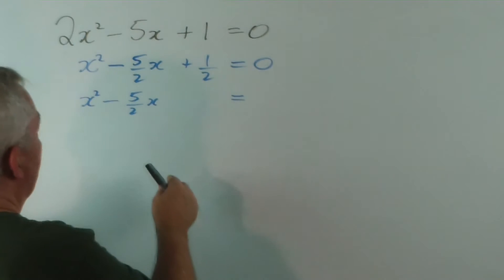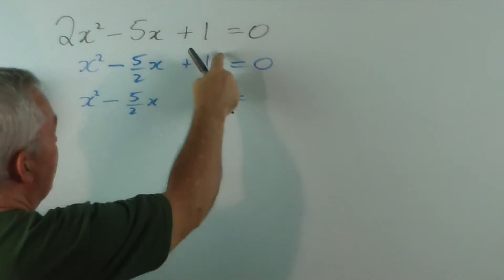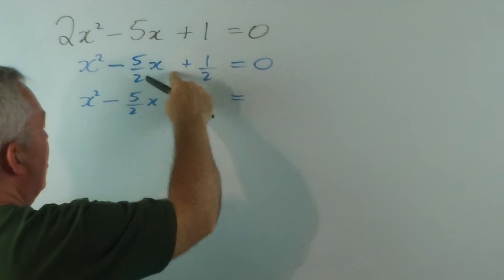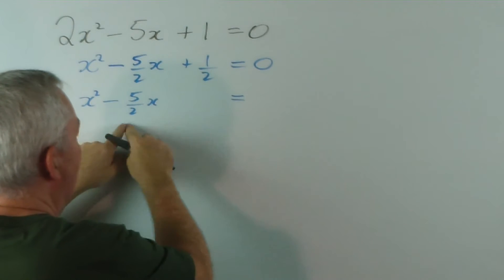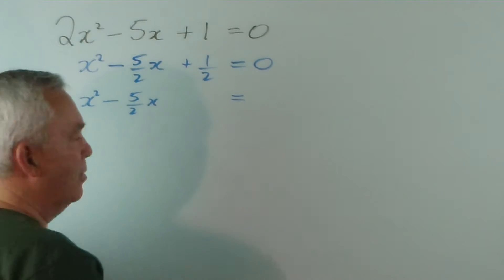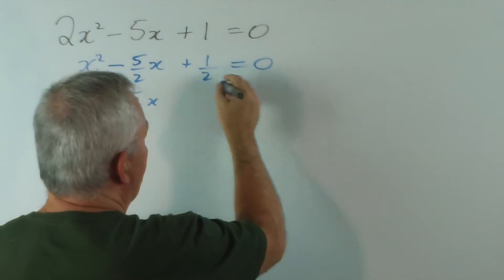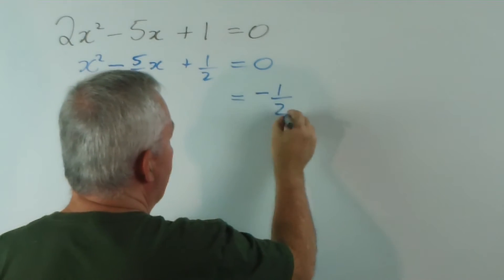So the first step is dividing 3 by 2. The second step is getting this number out of the road because we want to place a number here that makes this an absolutely complete perfect square. And plus a half is not the number. So if we subtract it from both sides, we end up with this.